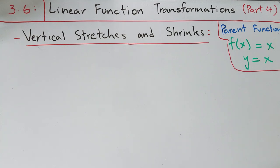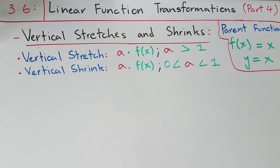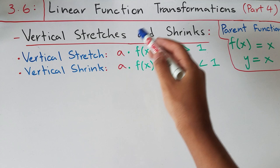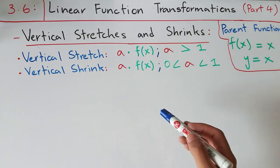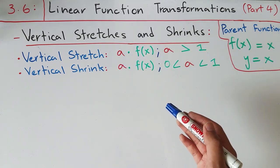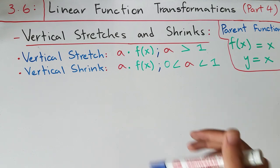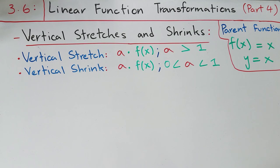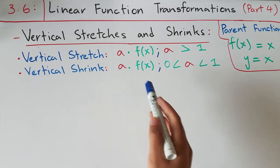Now let's talk about vertical stretches and vertical shrinks. In vertical stretches and shrinks, your a factor is multiplied with f(x) — so instead of multiplying the x value by a, you're multiplying the whole function by a, which means you're changing your y values, not your x values. For vertical stretches, a times f(x) applies when a is greater than one — for example, 1.5.